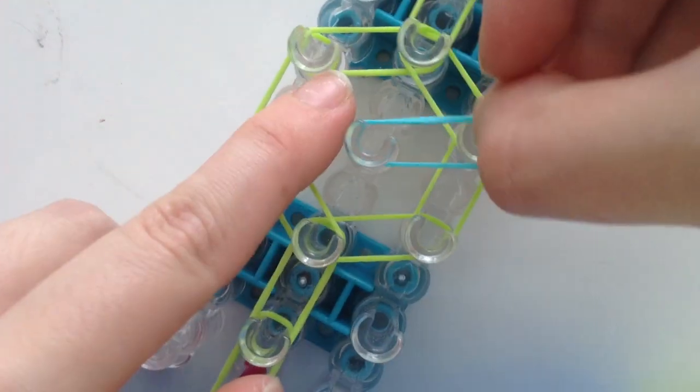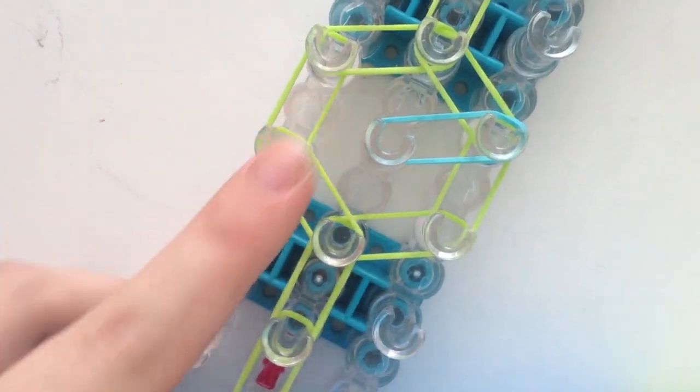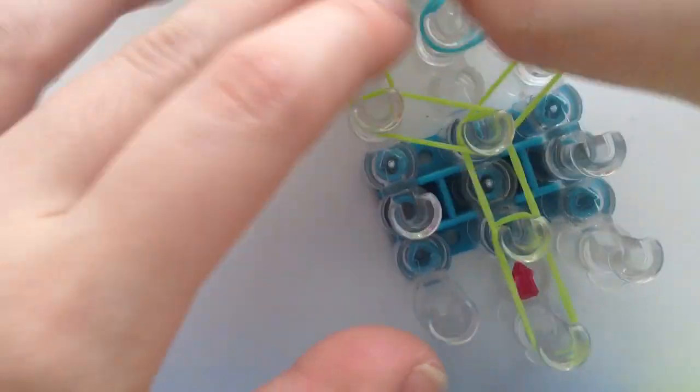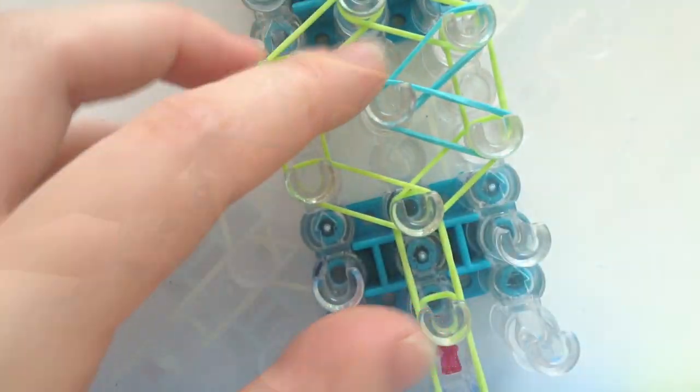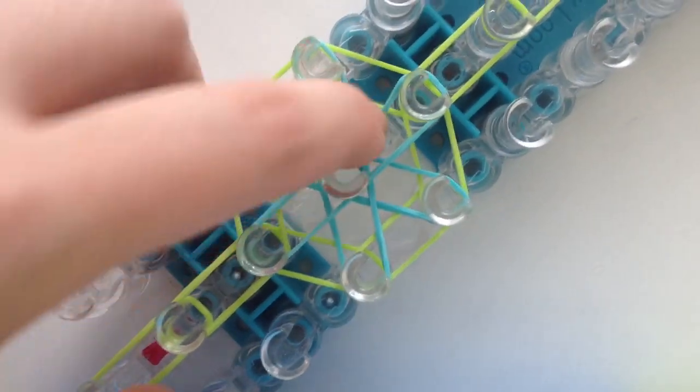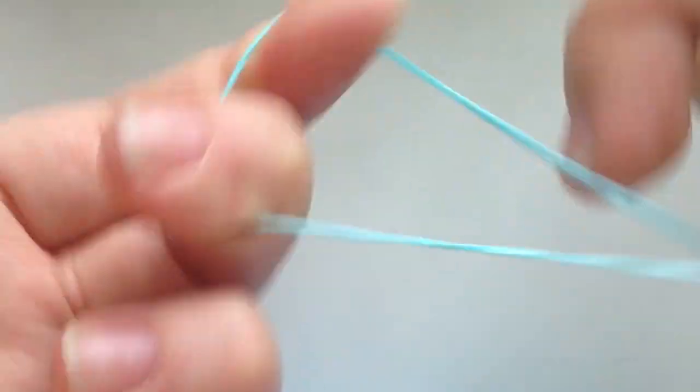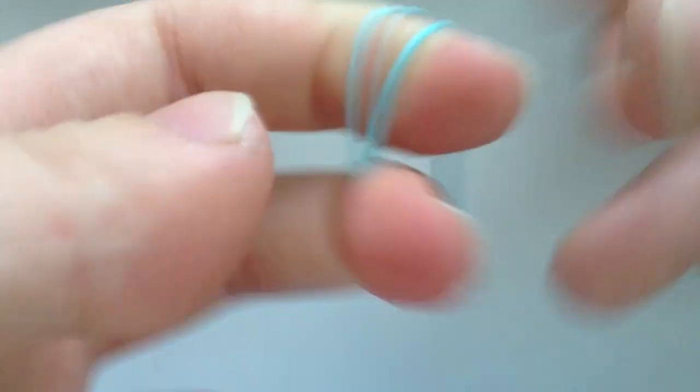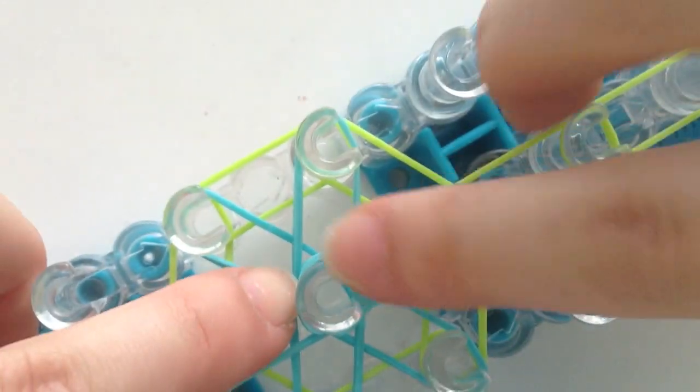Take your next color or next colors if you want to do a pattern and just place it starting in the center pin around each point of the hexagon. Now take your second color and you want to create a double loop and this will be your cap band.